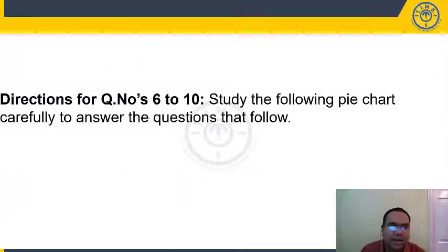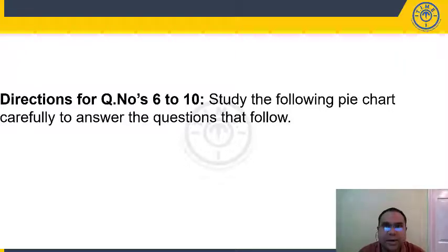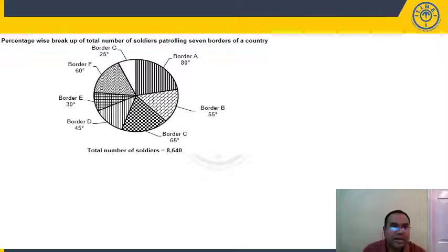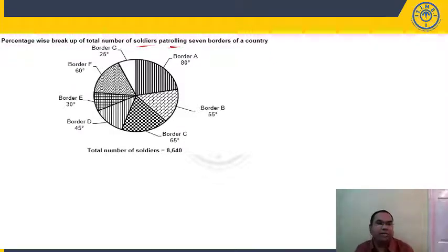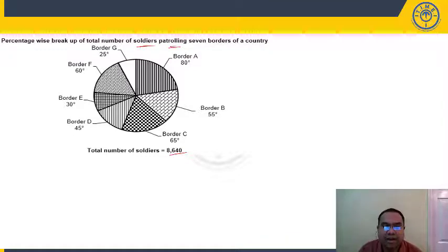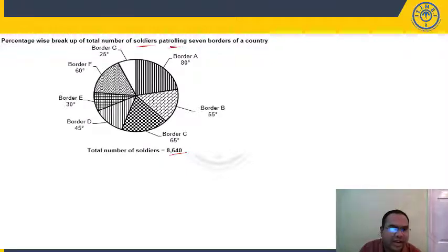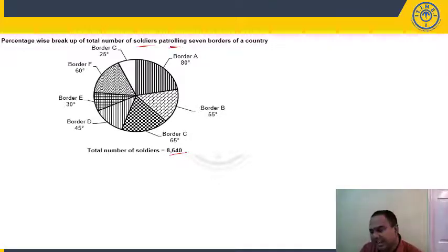For questions 6 to 10, we have a pie chart based on degrees. It shows the percentage-wise breakup of total number of soldiers patrolling 7 borders — A, B, C, D, E, F, G. The total number of soldiers is 8,640. The degrees add up to 360: 55 + 45 = 100, then 180, 245, 275, 300 + 60 = 360.